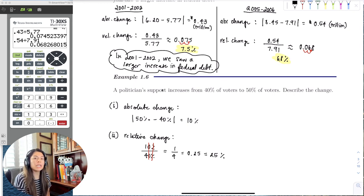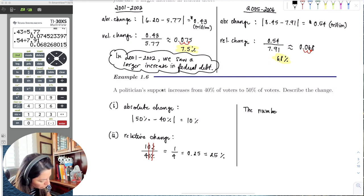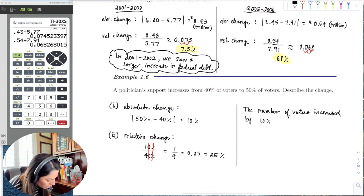even though the number of voters for the politician increased 10%. So recall that the absolute change is the same units as the original quantity. So we would say that the number of voters increased by 10% and there was a 25% increase in votes.